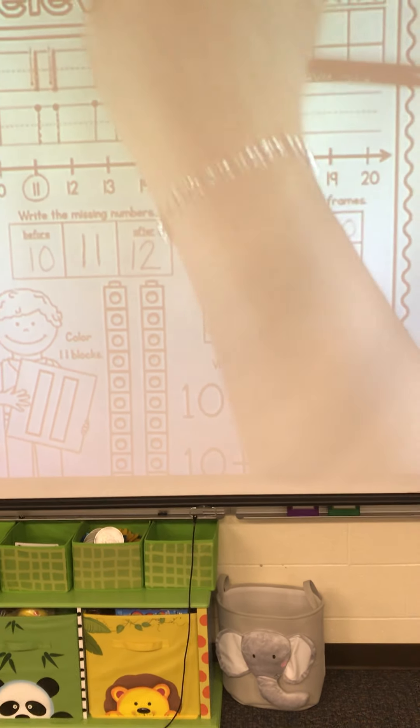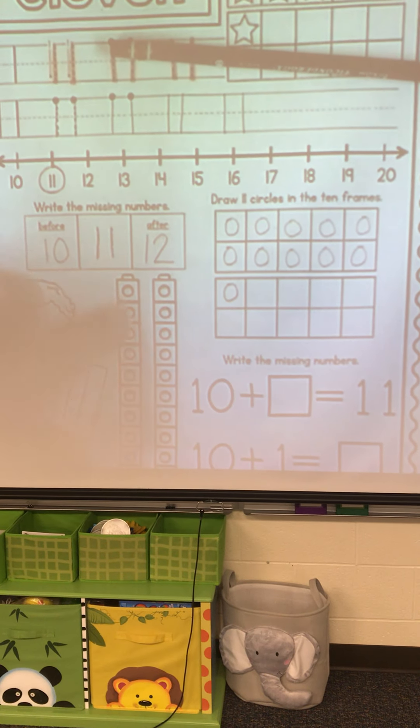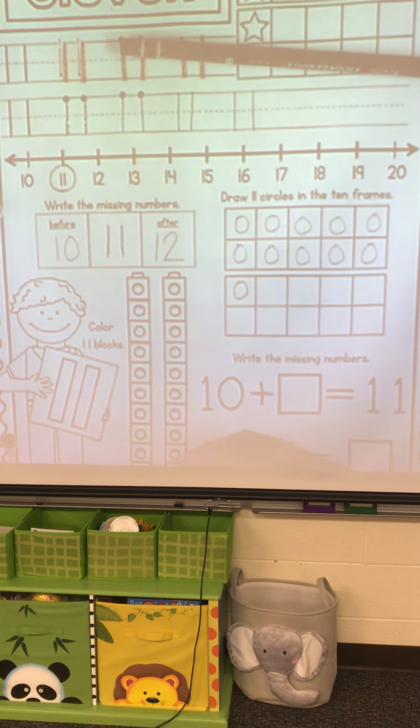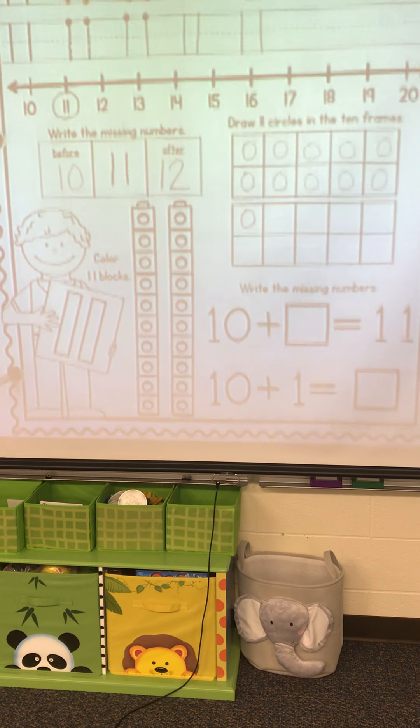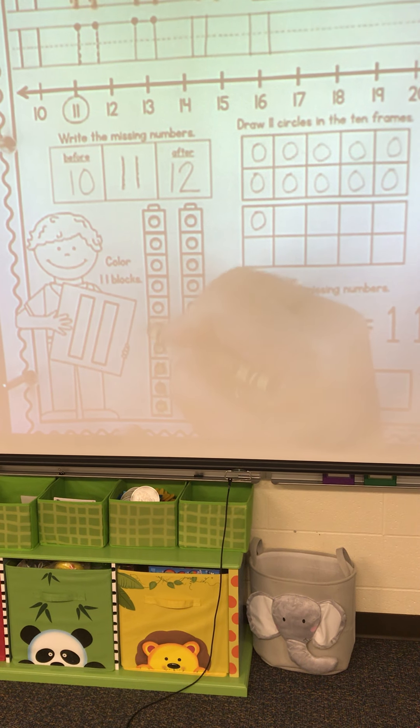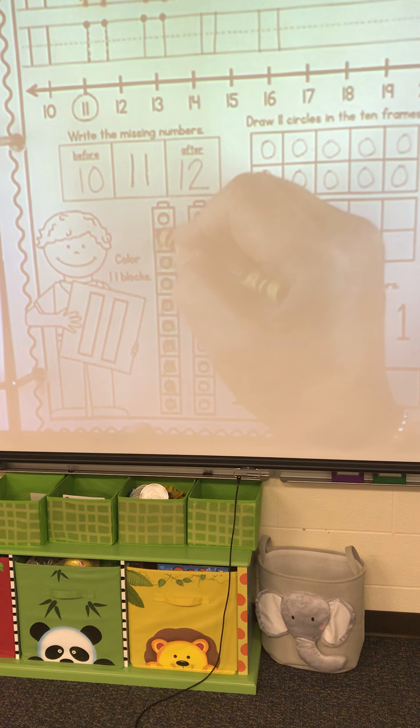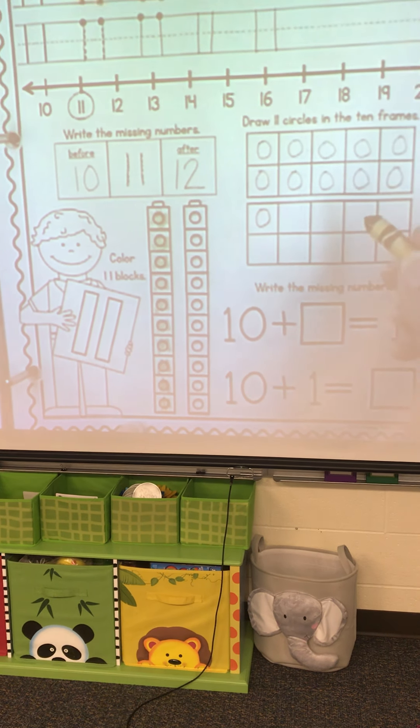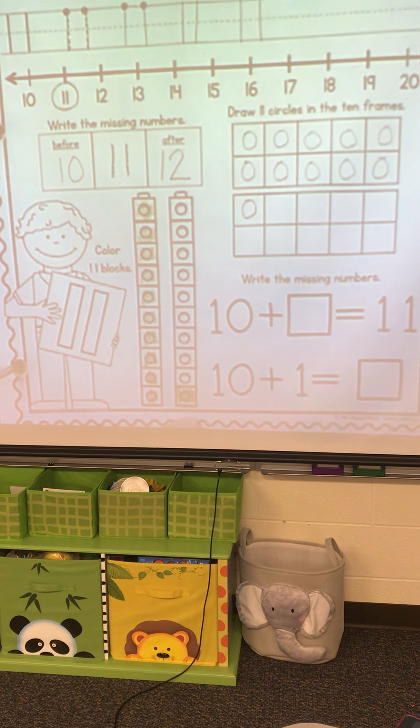Okay, grab any color that you want to. And we're going to color 11 blocks. And we start at the bottom of our blocks: 1, 2, 3, 4, 5, 6, 7, 8, 9, 10. And we go back to the bottom: 11.